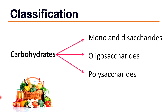Carbohydrates can be classified according to their chemical structure. There are mainly three groups: low molecular weight mono and disaccharides, intermediate molecular weight oligosaccharides, and high molecular weight polysaccharides.